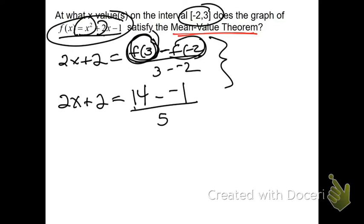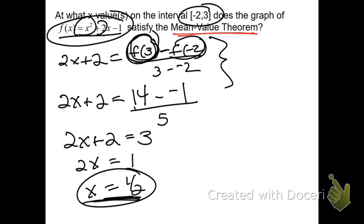So, f(3) minus f(-2) all over 3 minus (-2), which is 5. So, we plugged in the f(3) to get 14. We plugged in the -2 to get the -1. And, we're just going to clean this up. So, we have 2x plus 2 is equal to 15 over 5, which is 3. Solve for x. Subtract 2. Divide by 2. And, that's it. This is the spot on the graph where the slope of the tangent would be equal to the slope of the secant if we connected those endpoints. So, again, mean value theorem. Actual derivative equals estimated derivative. And, then solve.